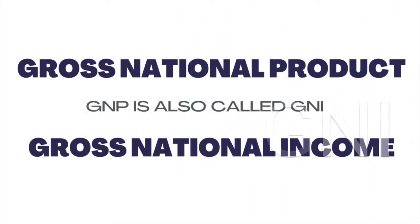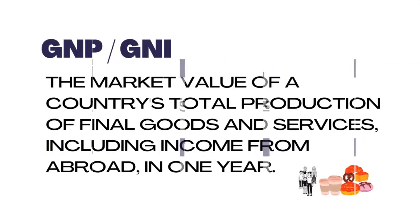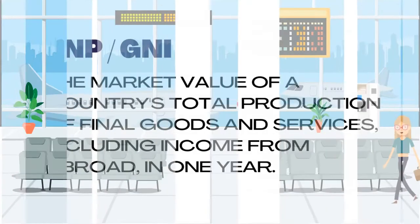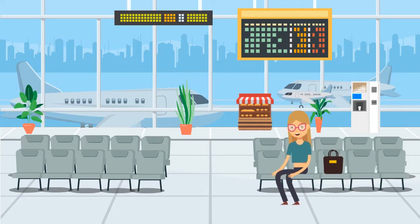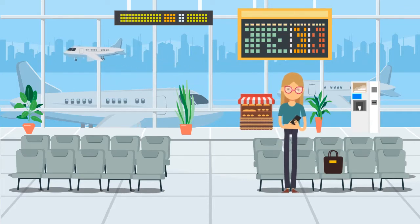In this video, we will refer to both gross national product and gross national income. We say that GNP or GNI is the market value of the country's total production of final goods and services, including income from abroad, in one year. GNP measures the total value of income by its citizens, regardless of location. So if you're working from abroad, the money you send back home is part of the country's GNP.